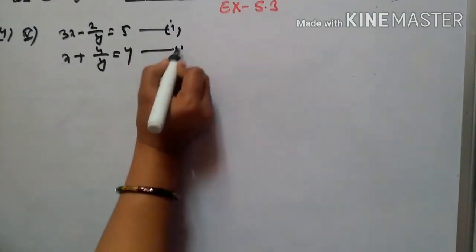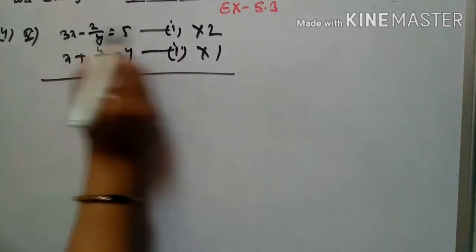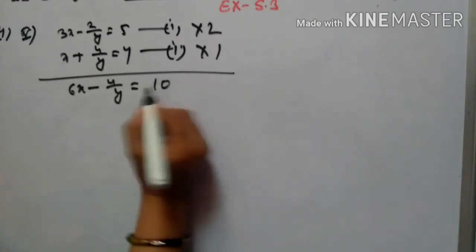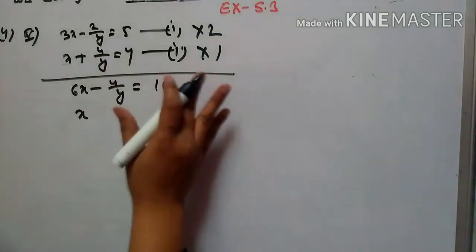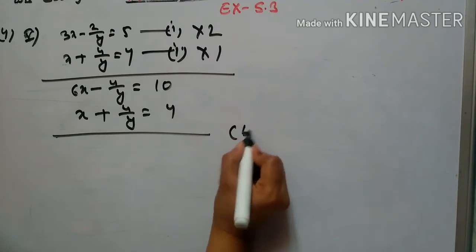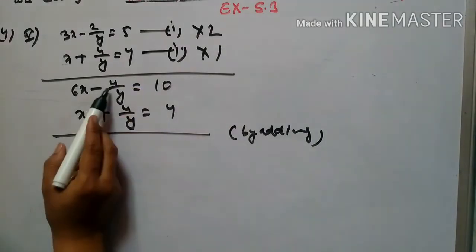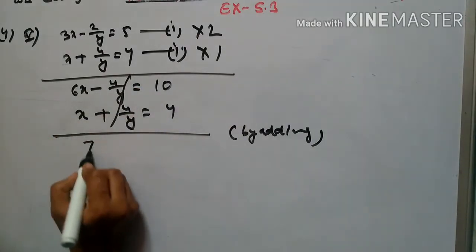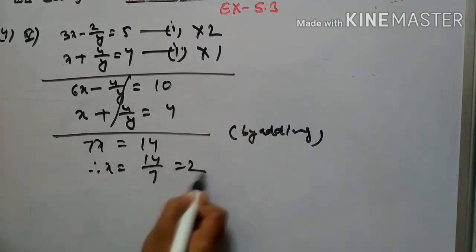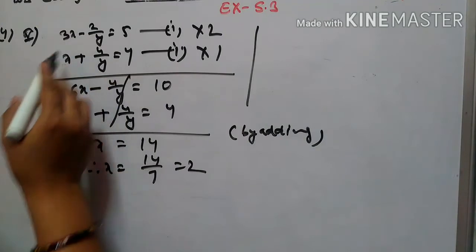We multiply equation 1 by 2 and equation 2 by 1. This gives 6x - 4/y = 10 and x + 4/y = 4. By adding, the 4/y terms cancel. We get 7x = 14, therefore x = 14 ÷ 7 = 2. The value of x is 2.